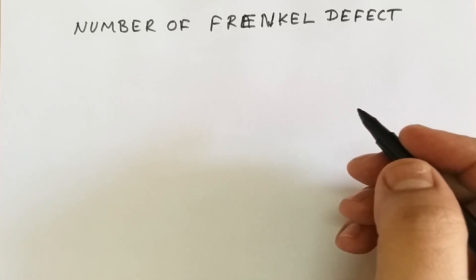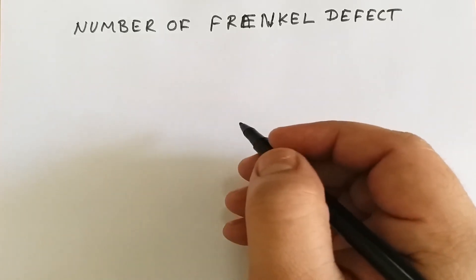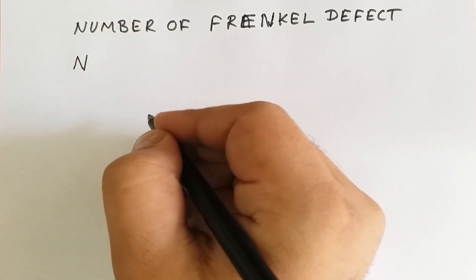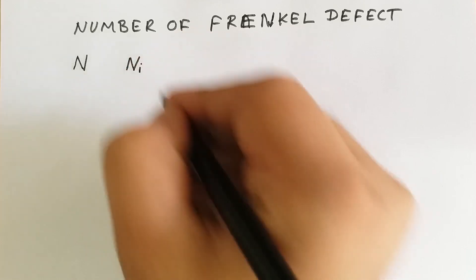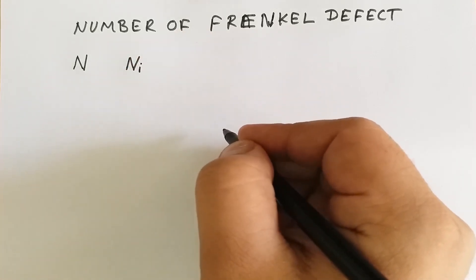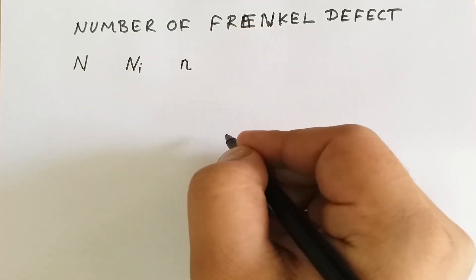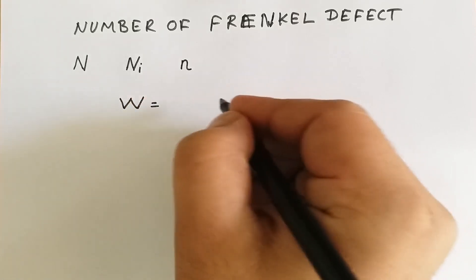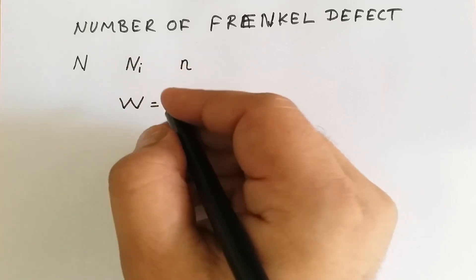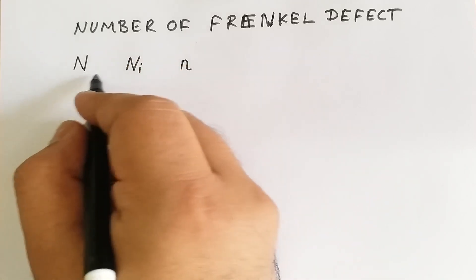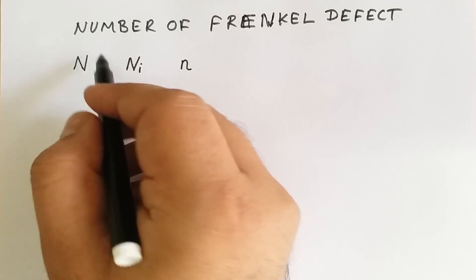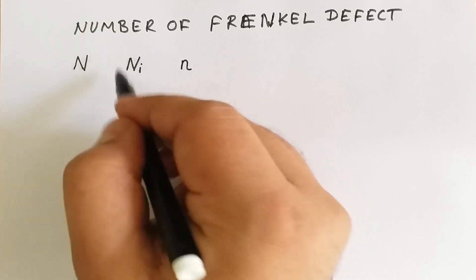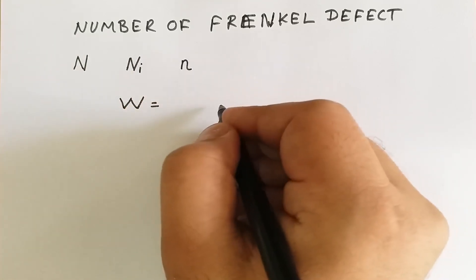The number of Frenkel defects we need to calculate will follow the same approach as we have seen in the case of Schottky defect. Suppose we are considering a crystal made up of N number of ions, and there are Ni number of interstitial spaces available in the structure. Suppose a small n amount of Frenkel defects are created. Then the total thermodynamic probability W of getting the arrangement of Frenkel defects requires permuting both the N ions and the Ni interstitial spaces.